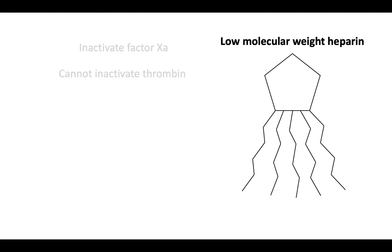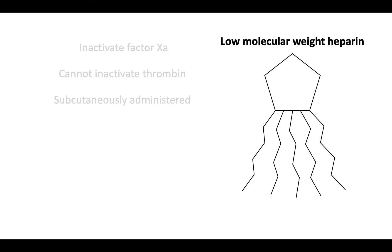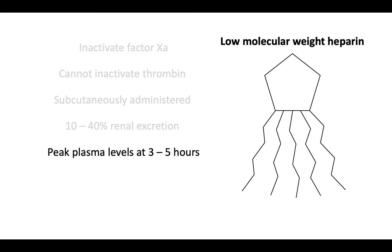Low molecular weight heparins are subcutaneously administered, which facilitates outpatient treatment. They are metabolized in the kidneys with about 10–40% renal excretion. After subcutaneous administration, peak plasma levels are achieved approximately 3 to 5 hours later. In normal renal function, the elimination half-life is about 6 hours, with a range of 3 to 7 hours.